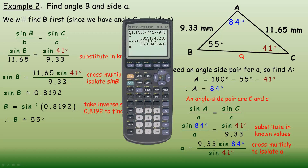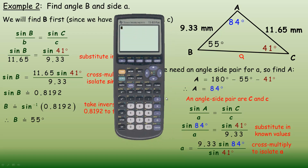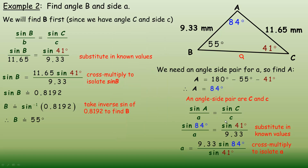On the calculator: 9.33 times sine 84, close the bracket, divided by sine 41. That works out to about 14.1 millimeters.